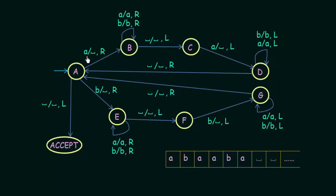We have the start state A and states B, C, D, E, F, G, and an accept state. In state A, if the first input symbol is A, we replace that A with a blank and move to the right. So the tape head starts here, we see an A, we replace it with a blank, and then move to the right. Now the tape head is one position to the right.